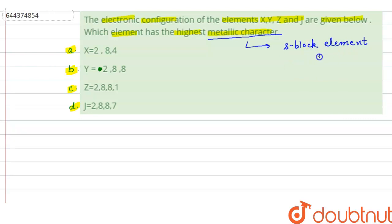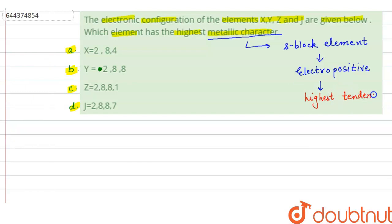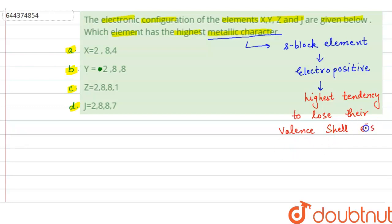S-block elements show the highest metallic character because they are electropositive in nature. They are electropositive because they have the highest tendency to lose their valence shell electrons, which is why they show the highest metallic character.